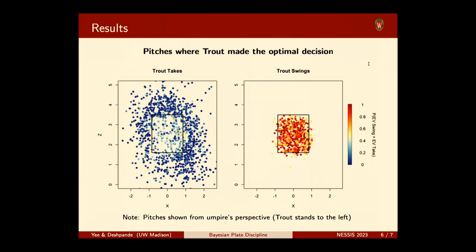On the left-hand side, there are many pitches on the outside that are dark blue — it was way outside, and we're very certain that Mike Trout should take these. You'll notice some pitches are more lightly colored, so the model is saying we think Mike Trout should take this pitch, but we're not that certain. That aligns with our intuition — if a pitch is inside the strike zone, there could be a situation where he would take it, but generally we think if it's in the strike zone, he should swing. These lightly colored pitches were taken in a situation that lends itself to taking, but the location gives us some uncertainty that's actually correct.